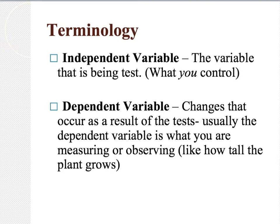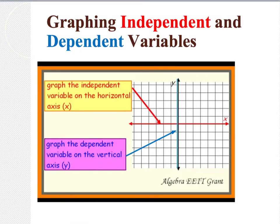A dependent variable is the change that occurs as a result of the test — usually it's what you're measuring or observing, like how tall a plant grows. When graphing, the independent variable goes on your x-axis, or horizontal line, and the dependent variable goes on your y-axis, or vertical line. Make sure you fill these in on your chart in your notes.